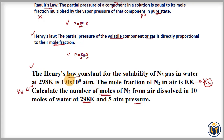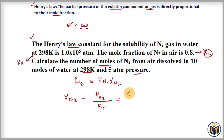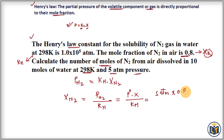The K value (Henry's law constant) is given, so we apply the formula: P(N₂) = K × X(N₂). Rearranging, X(N₂) = P(N₂) / K. Here P(N₂) is the partial pressure of N₂, which by Raoult's law equals P₀ × mole fraction of the solute, divided by K. Plugging in values: P₀ = 5 ATM, mole fraction of N₂ in air = 0.8, and K = 1.0 × 10⁵ ATM. The ATM units cancel out, giving us (5 × 0.8) / (1.0 × 10⁵).